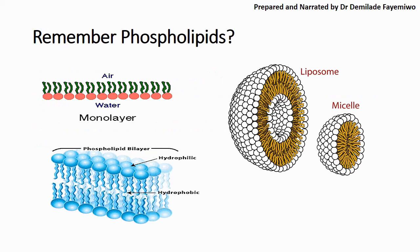If you recall what we covered in our first chapter — please make sure you check out those videos — we said that the phospholipid is a molecule that has a phosphate head which loves water and two hydrophobic tails which do not love water. Phospholipids make up the cell membrane. You can see in the blue diagram the arrangement of phospholipids in a cell membrane. We call that the phospholipid bilayer.